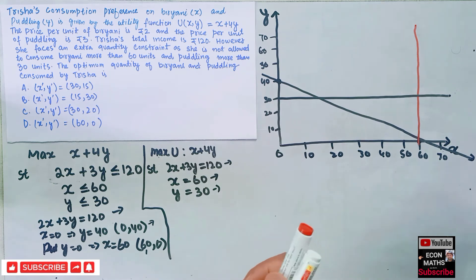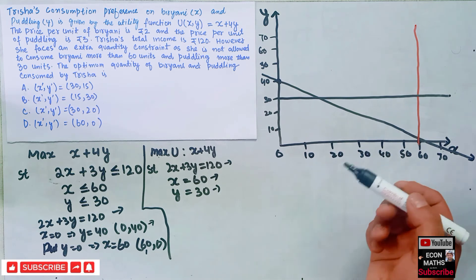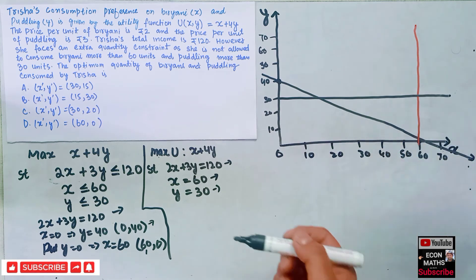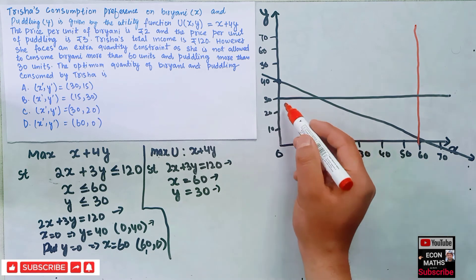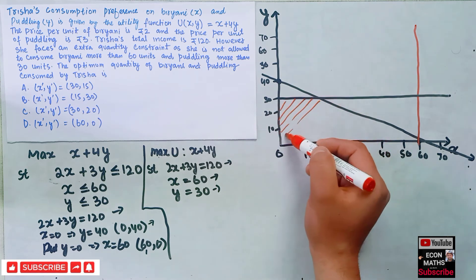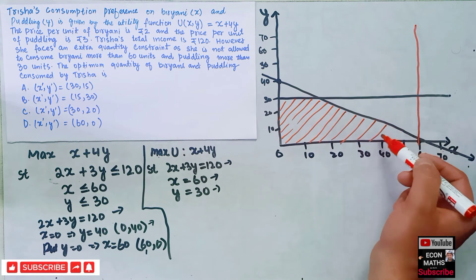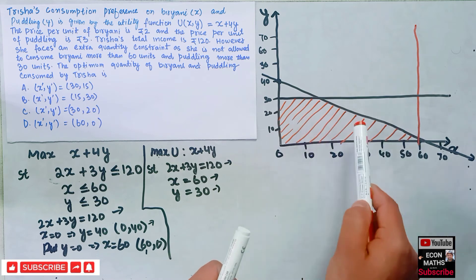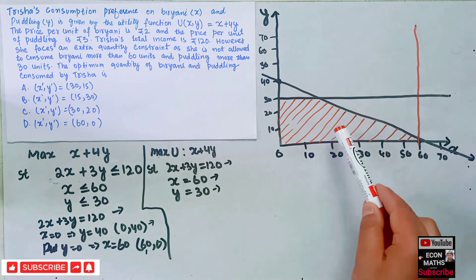After drawing all constraints, we find the feasible region, which is the common region determined by all the constraints. The constraints are: constraint one (2x+3y=120), constraint two (x=60), and constraint three (y=30). The common region of all three constraints gives us the feasible region, and our optimal solution will lie within this feasible region.